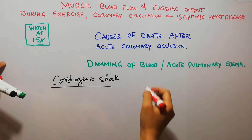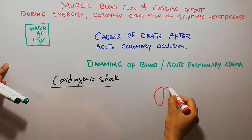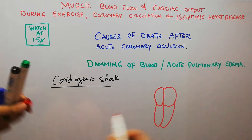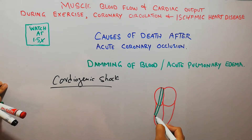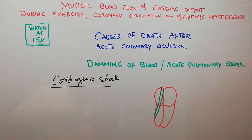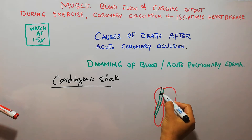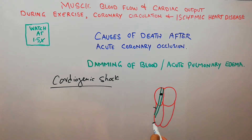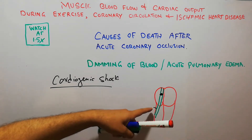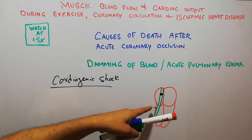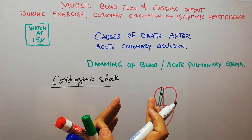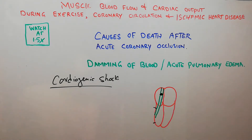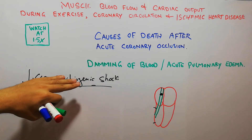When acute coronary occlusion occurs, a thrombus develops in one of the main blood vessels and acute myocardial infarction or a heart attack occurs because blood flow to a portion of the heart has stopped. That portion becomes either non-functional or the muscles die, so the heart cannot pump blood properly, leading to decreased cardiac output and cardiogenic shock — an important cause of death after acute coronary occlusion, discussed in our last lecture.